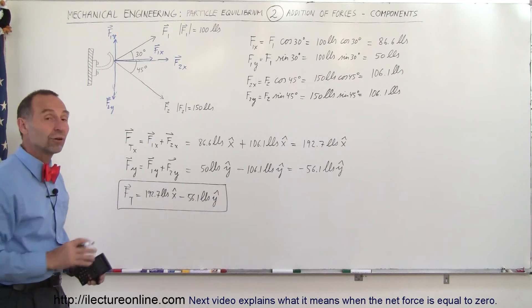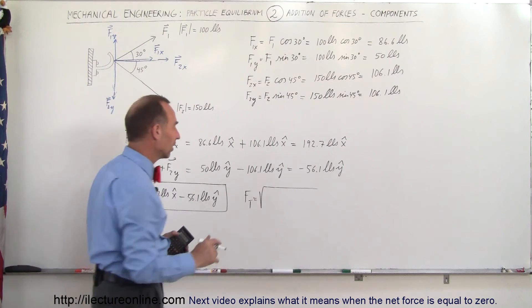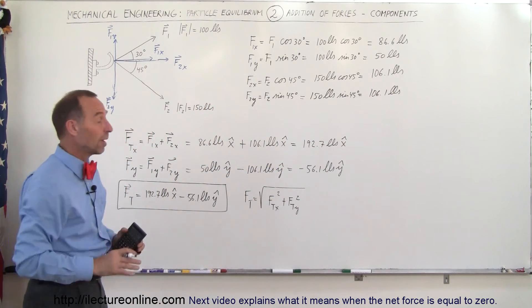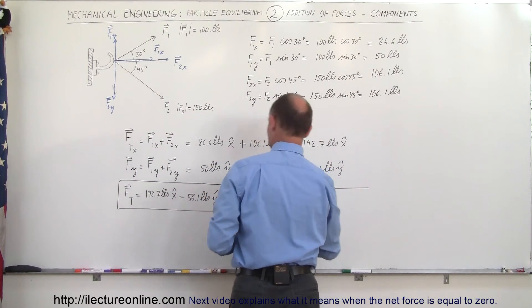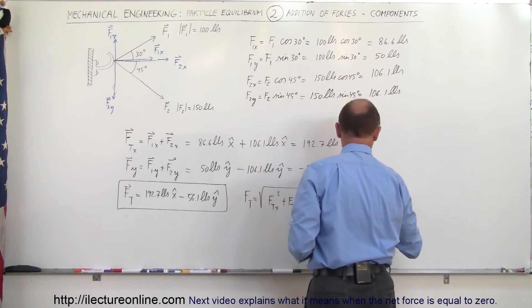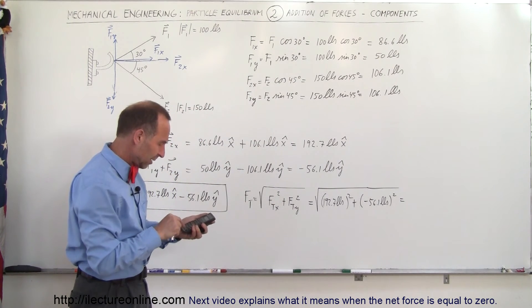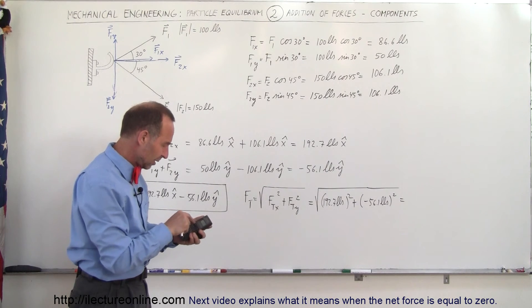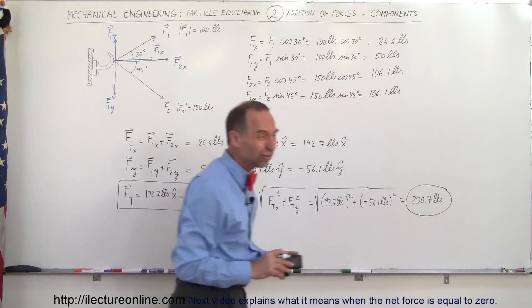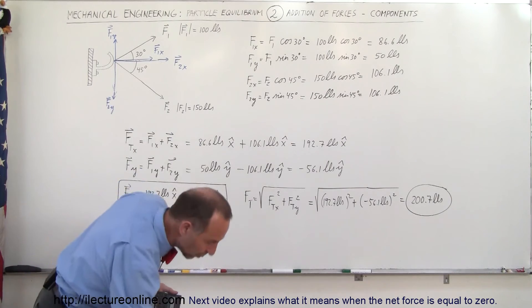These are the X and Y components of the resultant vector. F total is equal to 192.7 pounds in the X direction minus 56.1 pounds in the Y direction — that's the vector format. To find the magnitude, F total is equal to the square root of the sum of the squares of the components: the X direction squared plus the Y direction squared. As I'm squaring this, it doesn't matter if it's positive or negative. So that's the square root of 192.7 squared plus 56.1 squared, which gives us 200.7 pounds — the magnitude of the resultant, rounded off to the nearest pound is 201 pounds.